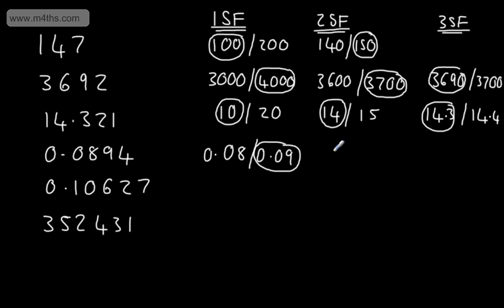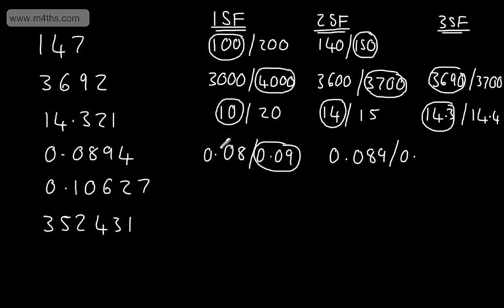To two significant figures, my choices are going to be 0.089 — remember, the second significant figure is this one — or the other option is 0.090. So if I wanted this correct to two significant figures, we consider 0.090.